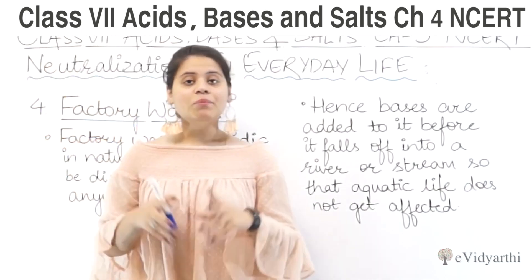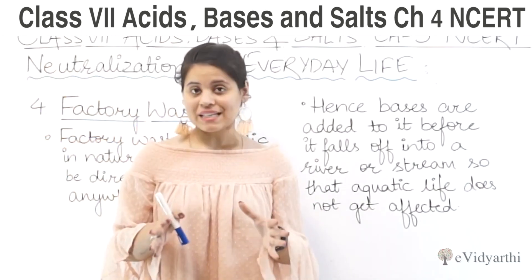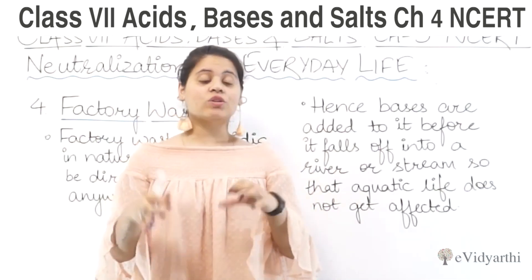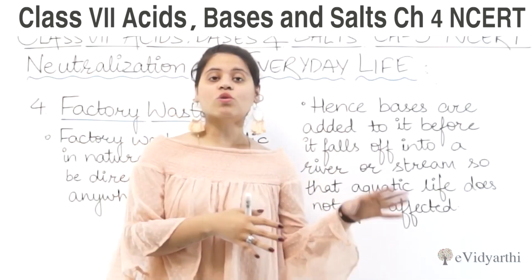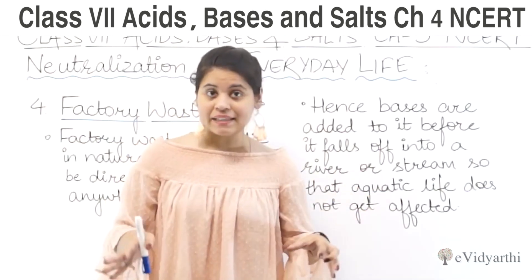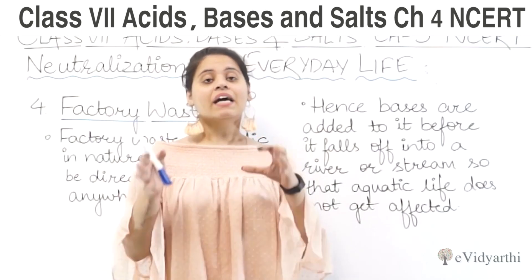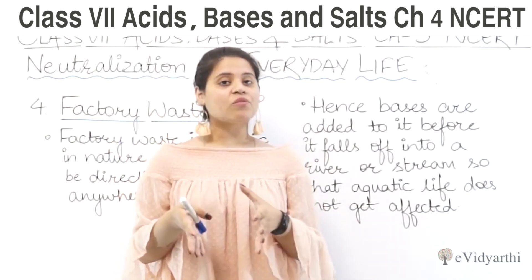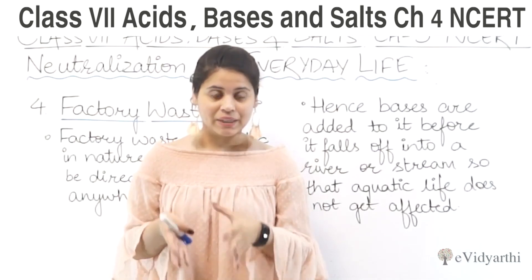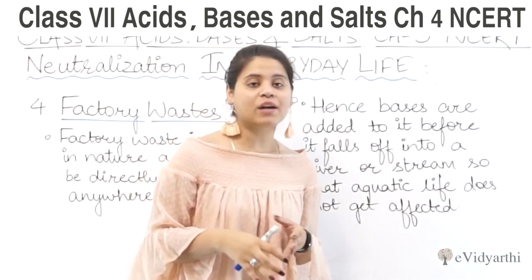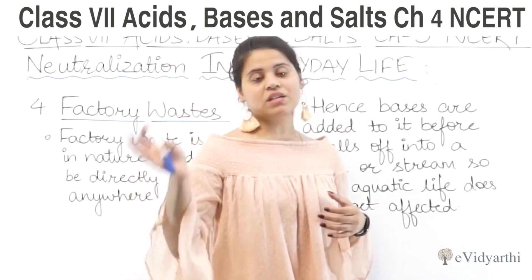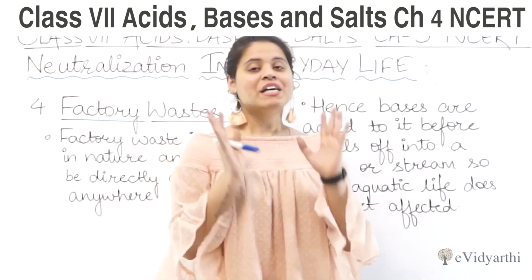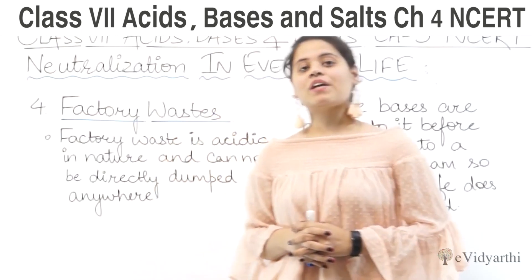Because the factory waste is acidic, if it goes directly into rivers and streams it will harm the aquatic life. That is why bases are added first before it is released into rivers and streams. With this, we have completed this chapter, and now we move to the exercises.